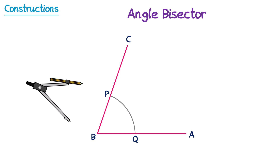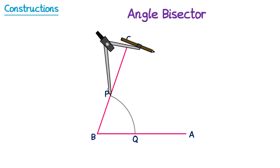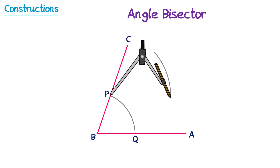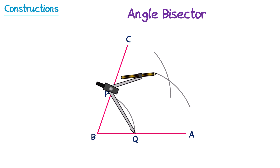You then take the pair of compasses, and at this point I normally make them a little wider — you don't have to, but I find it a bit easier. We place the sharp point at one of those points P or Q, so let's place it on P, and we draw an arc here. We then move the pair of compasses down to point Q, but crucially we don't change their width — it must be exactly the same size as the arc we just drew. We then draw an arc from Q like this.